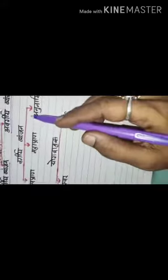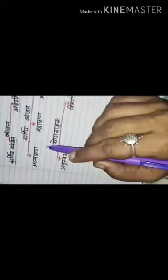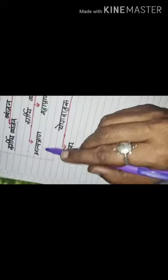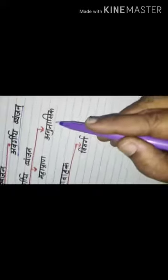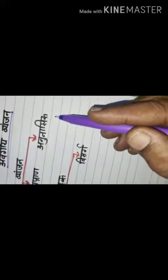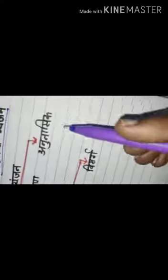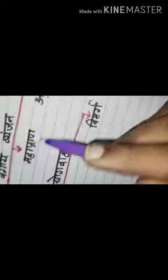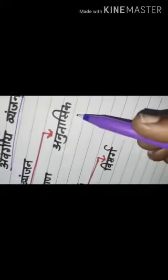In Vargiya Venjan, there are three types: Alpapran, Mahapran, and Anunasik.